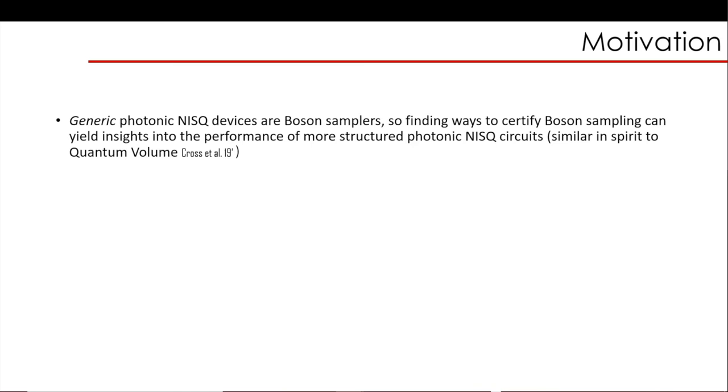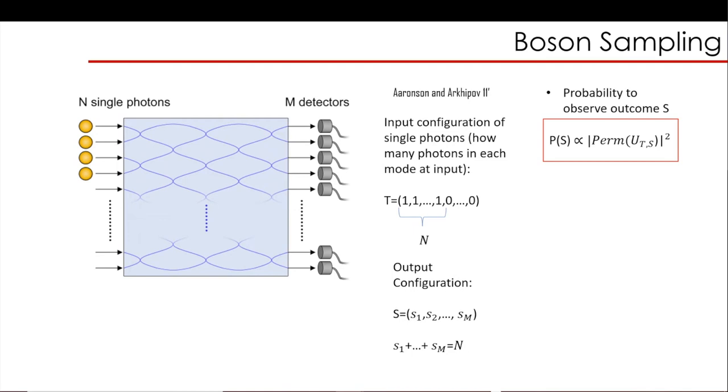So just to recap what boson sampling is. You start out with the same setup - this photonic NISQ device with single photons, linear optical circuit and detector - and you play the following game. You input your single photons through a linear optical circuit with phase shifters and beam splitters configured in a certain way. Then you measure with your detectors the outputting single photons. Then you ask: if I have a given configuration S1, S2 until SM - where S1 means how many photons are at the first detector, S2 at the second detector, and so on - what is the probability to observe such an outcome? Actually, you can show by pen and paper calculations that this probability is proportional to what is called the permanent of a matrix. So I'll explain a bit what a permanent is.